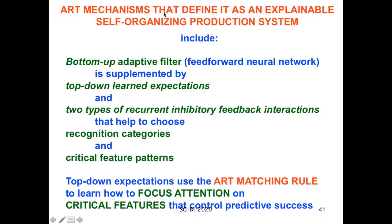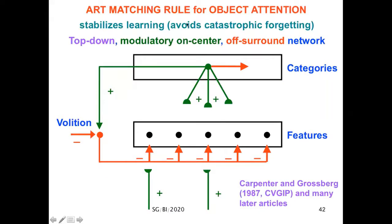Here are some of the ART mechanisms that define it as an explainable self-organizing production system. It includes, of course, that it's a bottom-up filter as also in backprop and deep learning, but that's supplemented by top-down learned expectations and two types of recurrent inhibitory feedback interactions that help to choose recognition categories and the critical feature patterns. These top-down expectations use what I call the ART matching rule to learn how to focus attention on critical features that code predictive success. The ART matching rule embodies how the brain does object attention and it helps to stabilize learning and thereby avoid catastrophic forgetting. It's realized by a top-down modulatory on-center off-surround network.